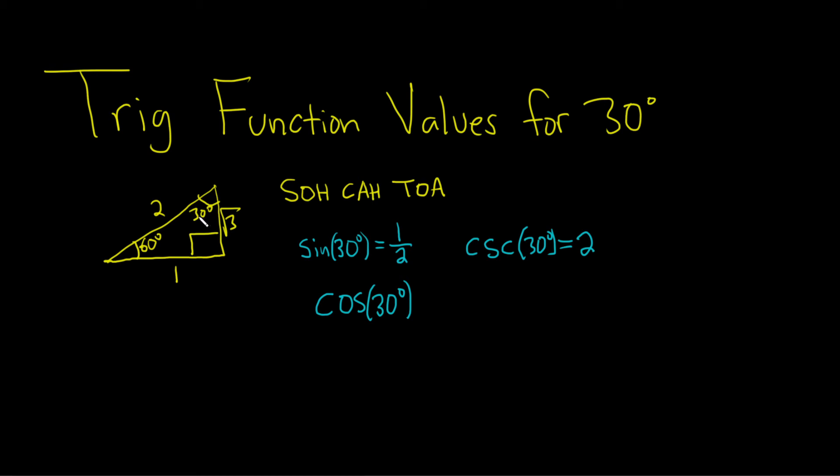We're looking at 30. So the adjacent to 30 is square root of 3. Easy to mess up. So adjacent to 30 is square root of 3 over the hypotenuse, which is 2.